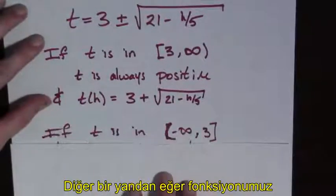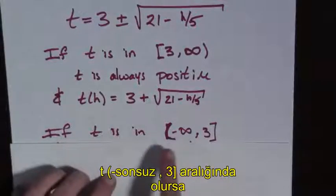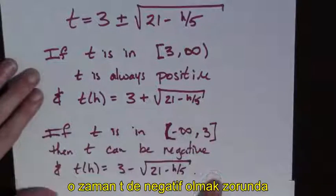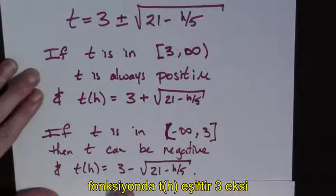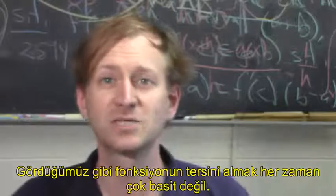On the other hand, if t is in negative infinity to 3, that's the interval going to negative infinity and containing 3, then t can be negative and t(h) is equal to 3 minus the square root of 21 minus h over 5. As we've seen,